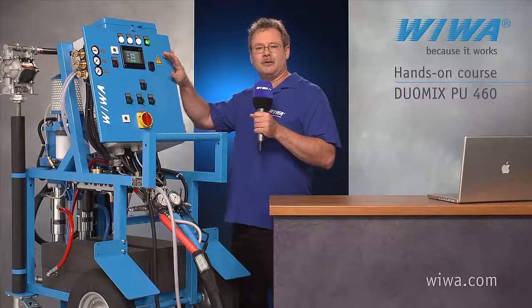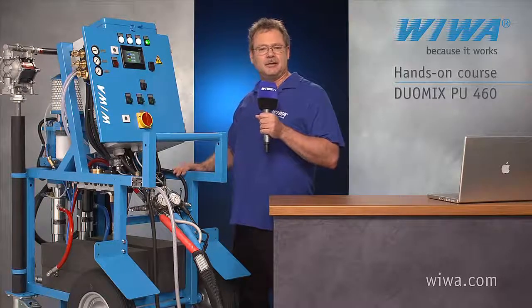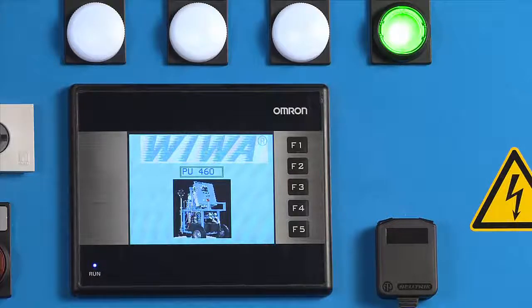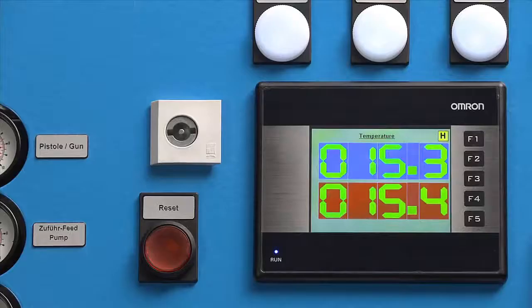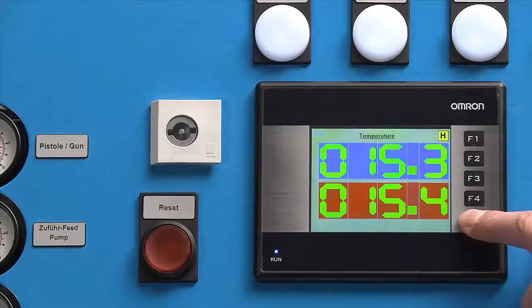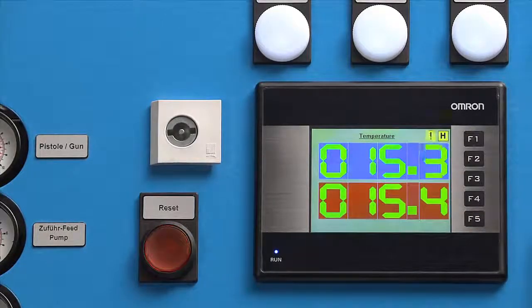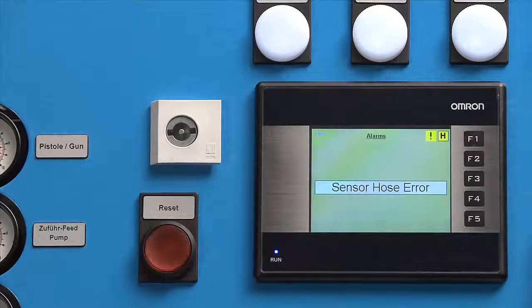I'll show you how the display works first so you can set the temperature. After switching on the system, the display shows the welcome screen. To the right of it, there are the buttons F1 to F5 that you use to navigate through the menus. Pressing F3 always takes you back to the welcome screen. In the other menus, the system may display different symbols in the top right hand corner. An exclamation mark indicates that there is a malfunction in the system. If you press the F5 button, you can display this message.